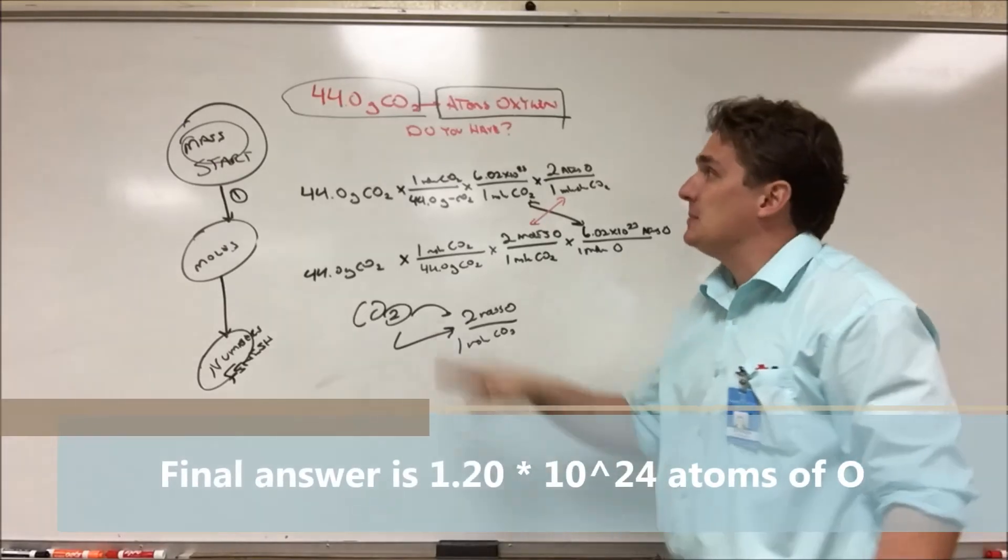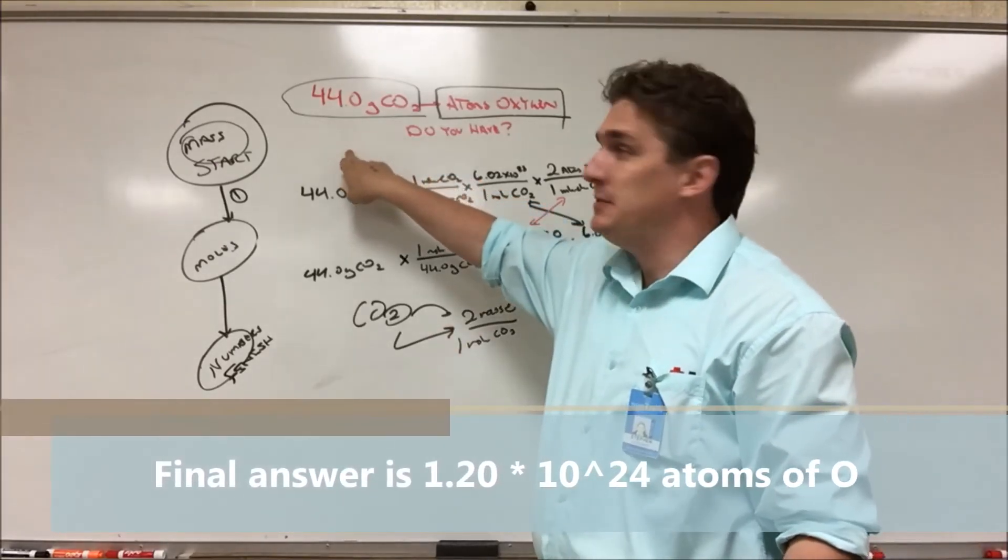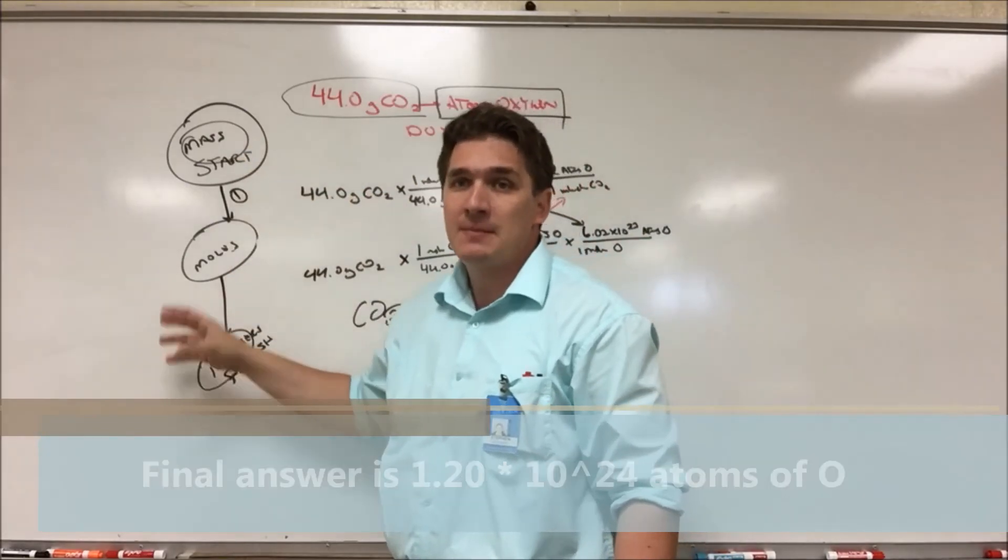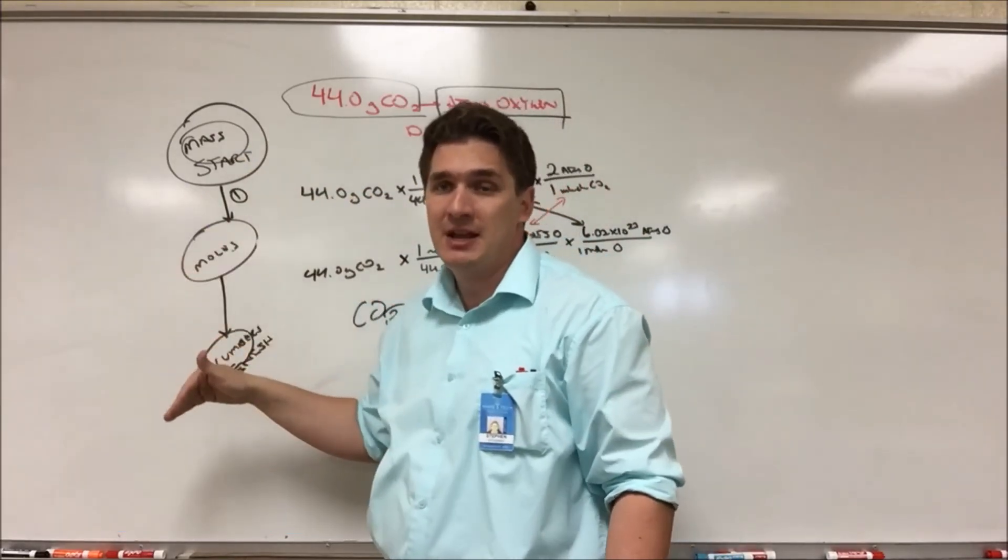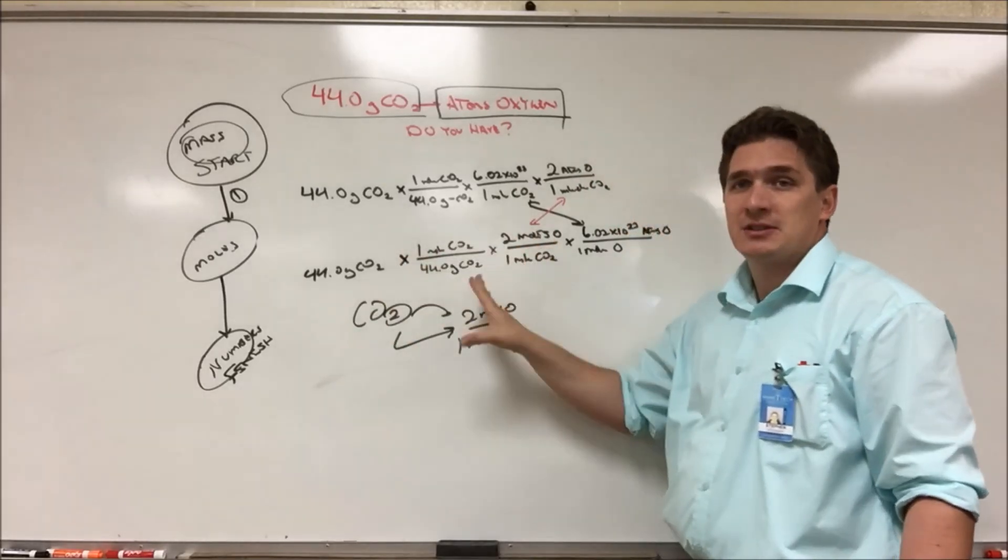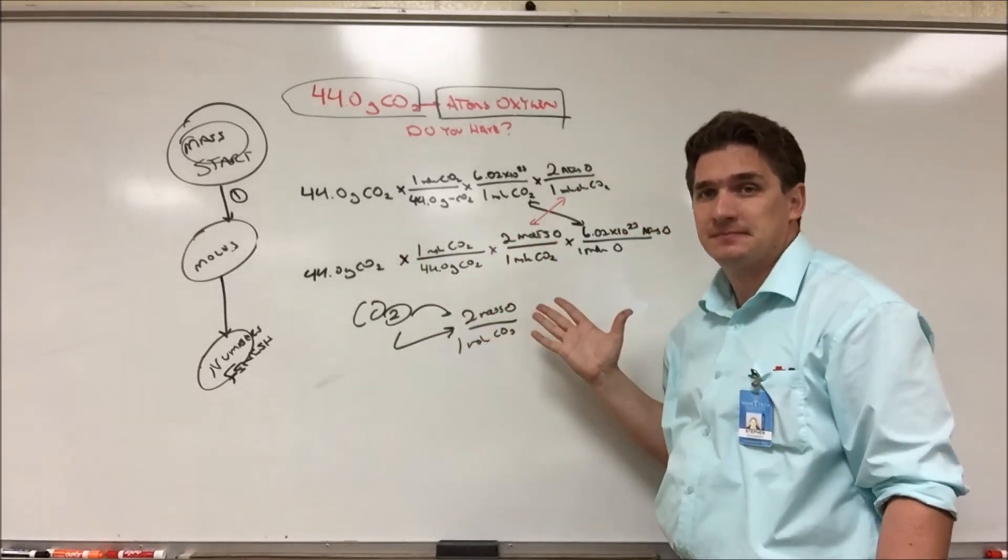So this is how you set up most of these problems. Begin with by figuring out what you're being asked to find and what you're given. Look at your mole flow diagram, figure out how many steps it's going to take, figure out what those conversion factors are, implement your conversion factors and get your final answer. That's it.